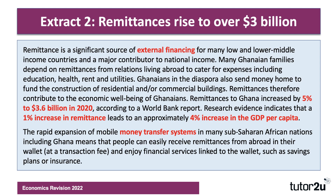The second extract is about remittances. Remittances are a significant source of external financing for many low- and middle-income countries, including Ghana, and a major contributor to their GNI. Many Ghanaian families depend on remittances from people living overseas to pay for education, health, rent, and utilities. Remittances to Ghana increased by 5% to over $3.6 billion in 2020. Research from the World Bank suggests a 1% increase in remittances can drive a 4% increase in GDP per capita. When you get your extracts in the exam, get that highlighter pen out, work through the data, underline and circle things — work with the data so you can easily bring it in as application.